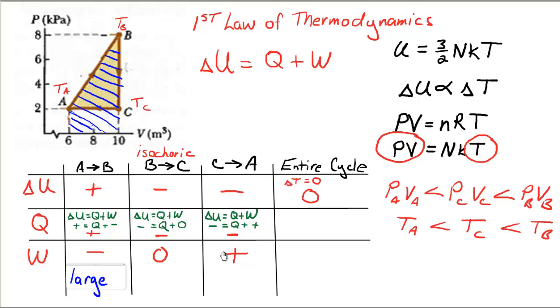But from C to A, we found there was positive work done on the gas as we squeezed it. And it would be the area under the curve, under that straight line between C and A. I'll shade that one in red. And right away we can see from that red shaded region that it's a lot smaller than this larger blue one above it.